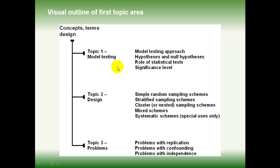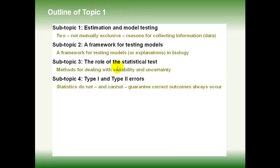Let's move to look at topic one, which has four main areas. The first subtopic is estimation and model testing. That's where we start looking at two different approaches, two different reasons for collecting data. The next is a framework for testing models. Then we look at the role of the statistical test in that process. And finally, we look at how statistical tests can cause us to make errors, and they're referred to as type one and type two errors.